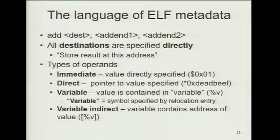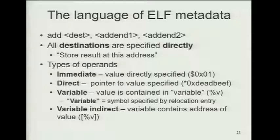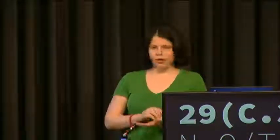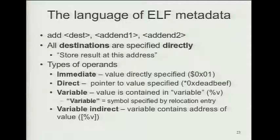Thinking about this at a high level: we have operands, a destination, and an instruction. All destinations are specified directly — store the result at this address right here. For operands, depending on the instruction, there are different ways to address values. You can specify the operand directly (right in the relocation entry, the value is immediate), or 'variable' — the relocation entry holds an index into the symbol table and uses the symbol's value — or 'variable indirect' — the symbol's value is an address, and from that address you read the value out.